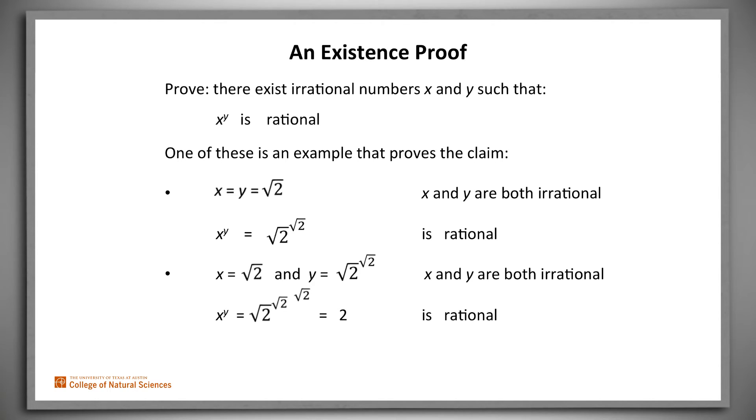We don't know which, but we don't need to know in order to have a proof. As it turns out, it's the second of these that proves the claim. 2 to the square root of 2 power isn't rational. But we didn't need to know that to write the proof.